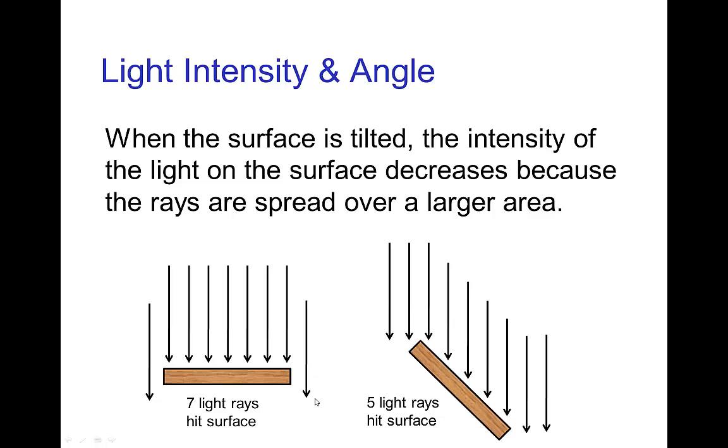So as you see in this illustration though, in the first case, we have seven light rays hitting the surface, but when we tilt it because of the angle, we only get five light rays. And so for that same surface, we have less light shining on it.